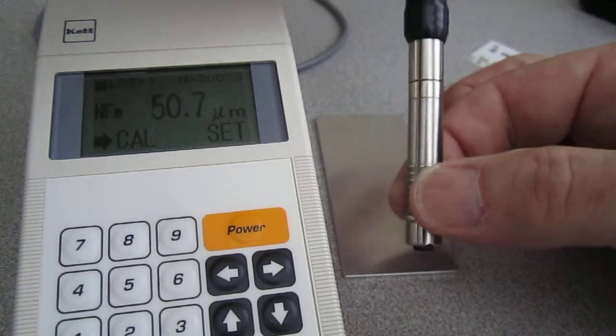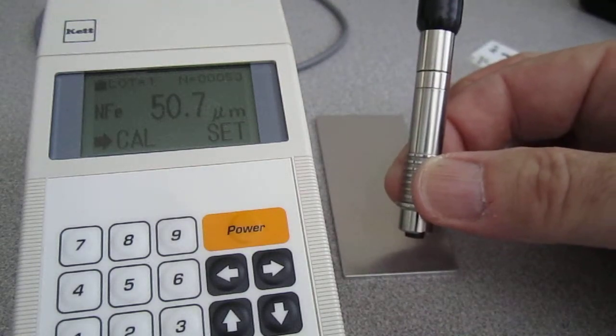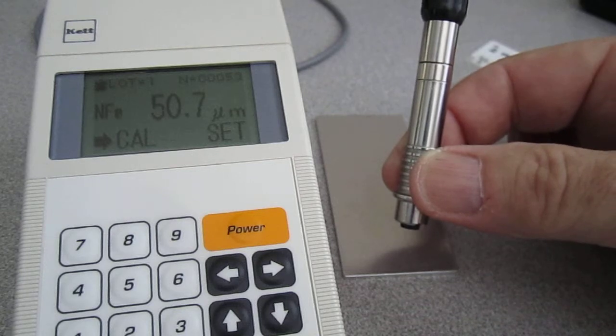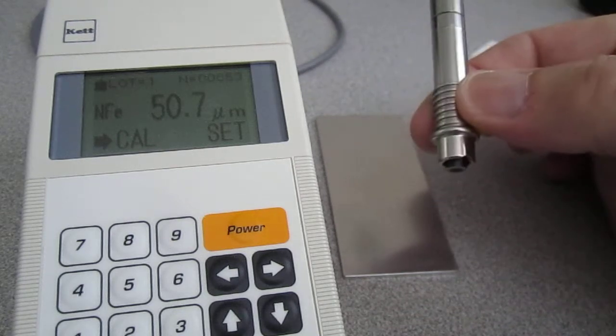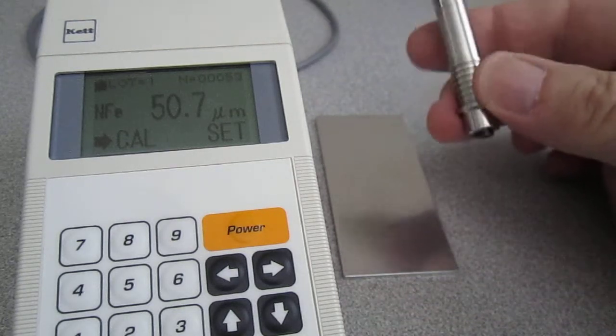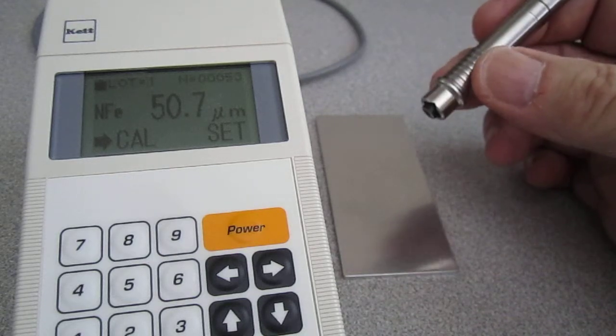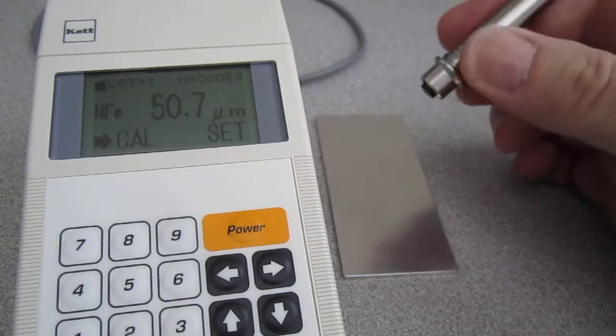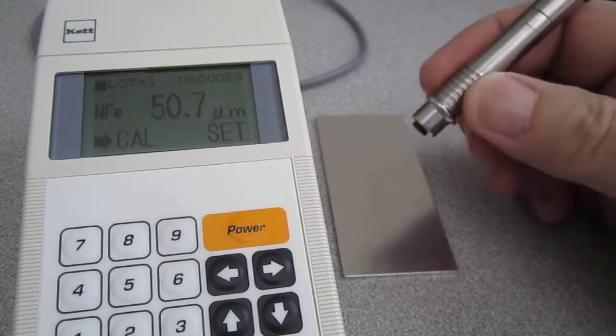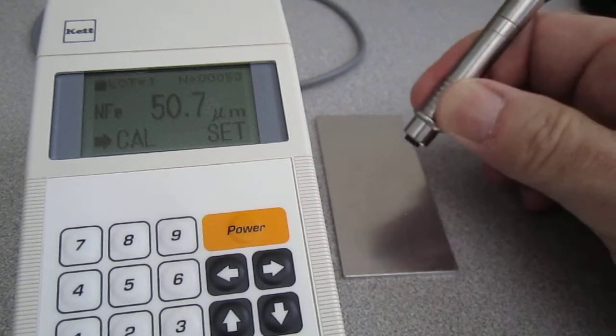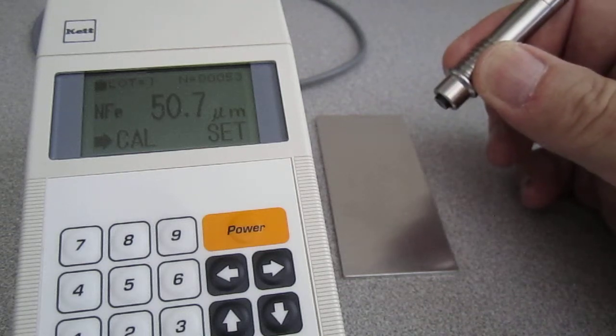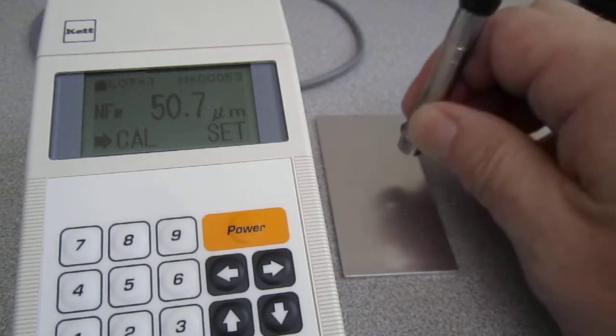You'll notice that the probe is spring-loaded to give consistent pressure and therefore help the operator make a consistent measurement. You'll also notice that the edge where the operator would hold the probe has both an extrusion portion and rough edges, which make it easier in a humid or damp environment to hold it or a hot environment to hold it and make good contact. We try to make it easy for the operator to get good measurements.